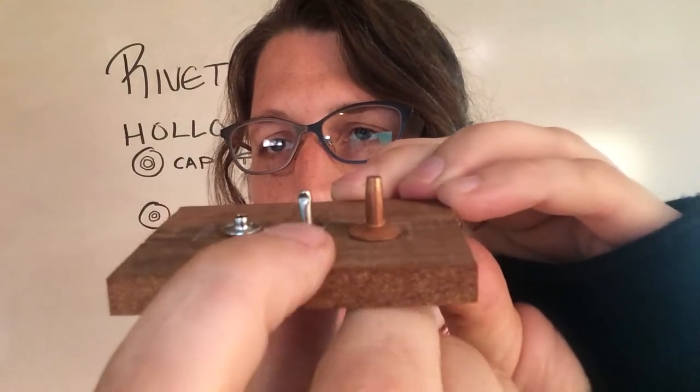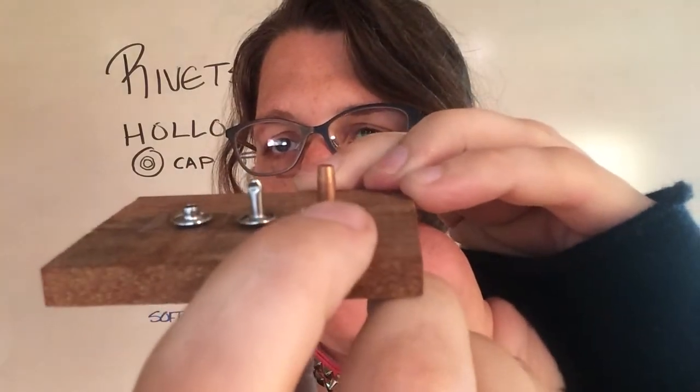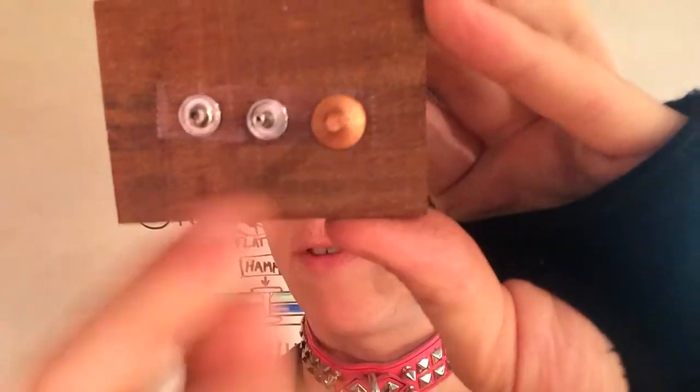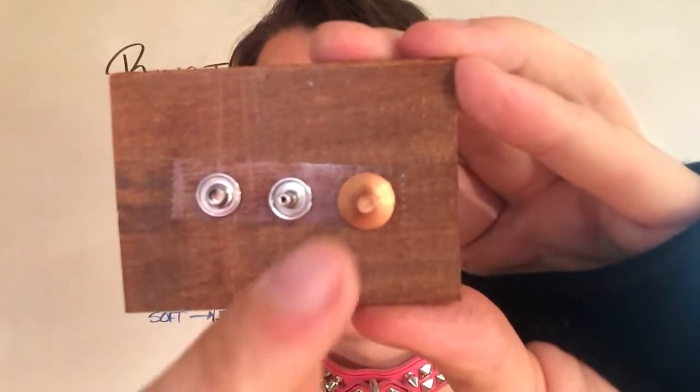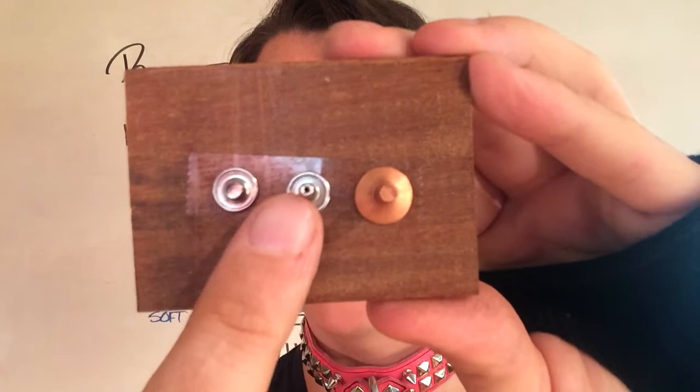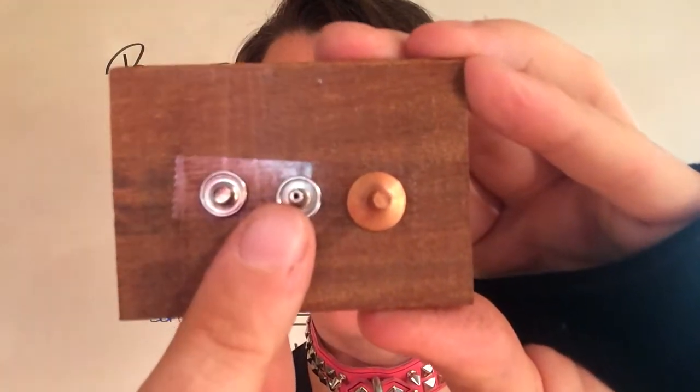Here's our hollow rivet, the silver, and our solid rivet, the copper. And if you look down the center of the shaft, look, there's no hole over here. There's a hole. Shocker.